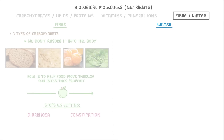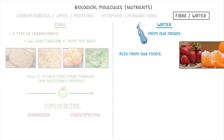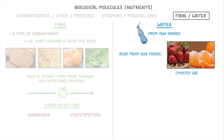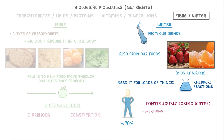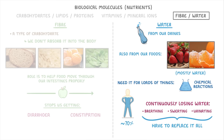Meanwhile, water is just normal water, so we get it from our drinks and also from most foods — for example, oranges and strawberries are mostly water. We need water for loads of things in the body including chemical reactions, but the main thing is that most of our body is made of water — in fact we're about 70 percent water. We're also continuously losing water by breathing, sweating and urinating, so we're constantly having to replace it all.